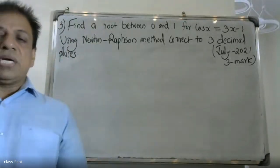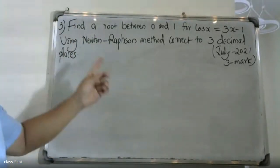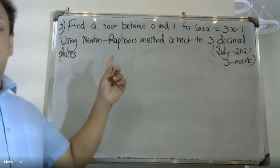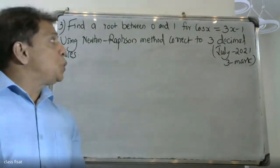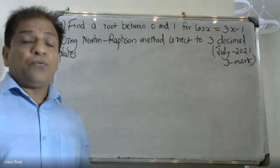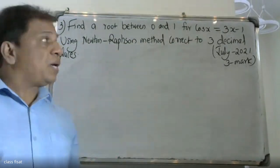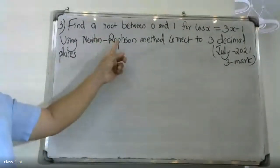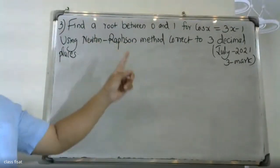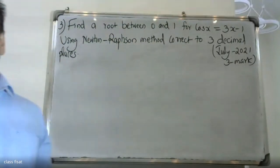Good morning students. This is a university question: find the root between 0 and 1 for cos x equal to 3x minus 1 using the Newton-Raphson method, correct to 3 decimal places.